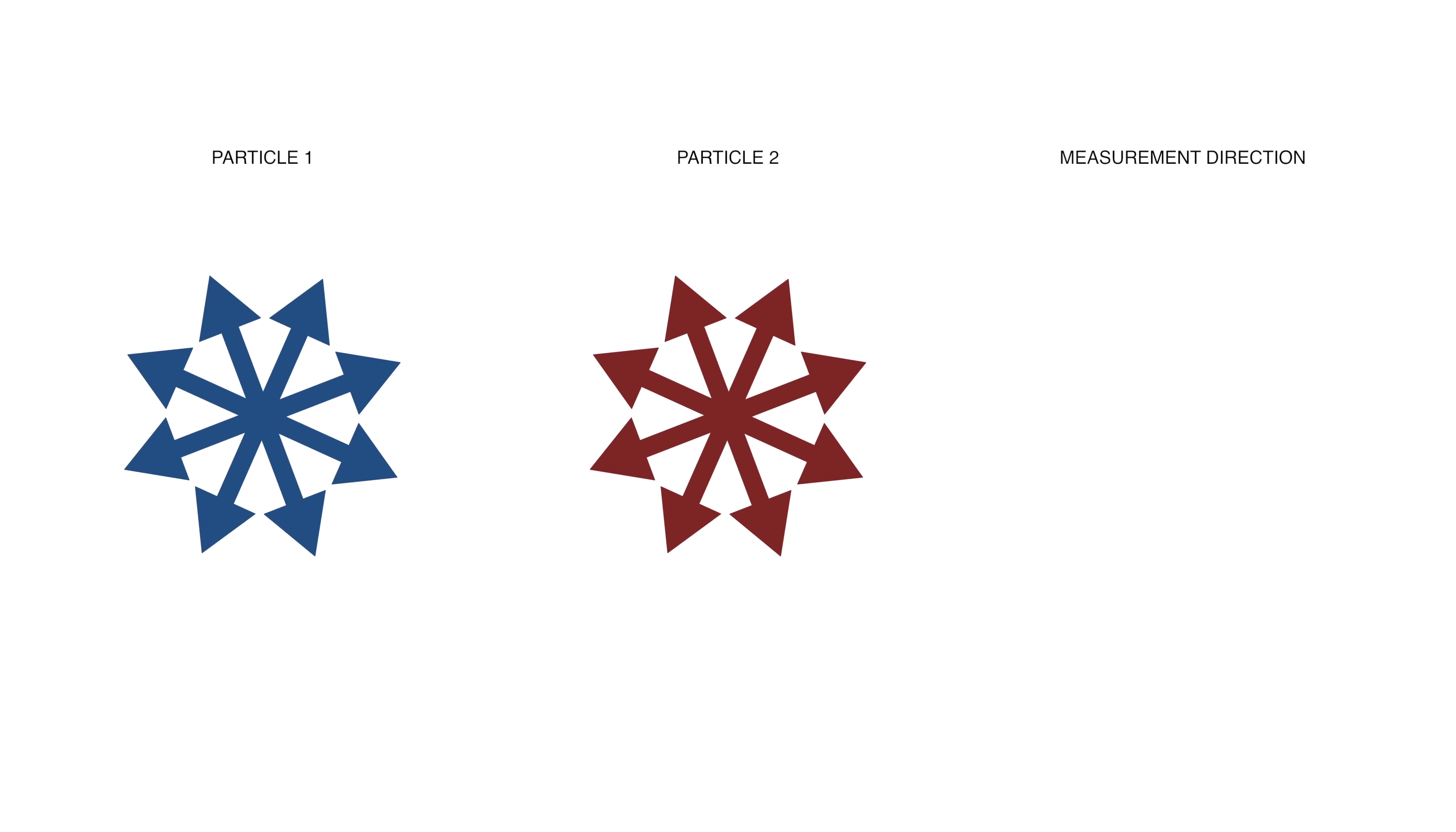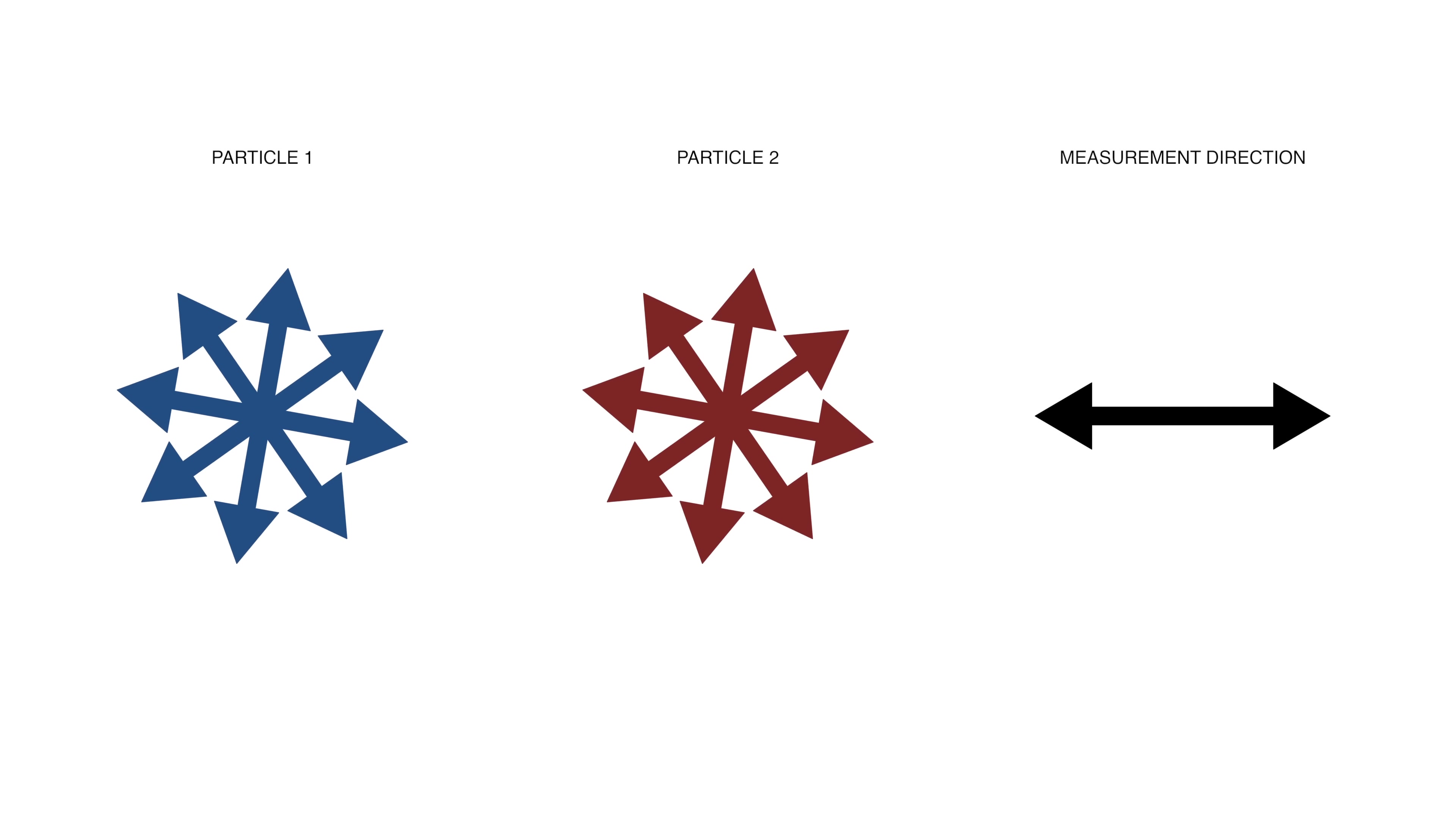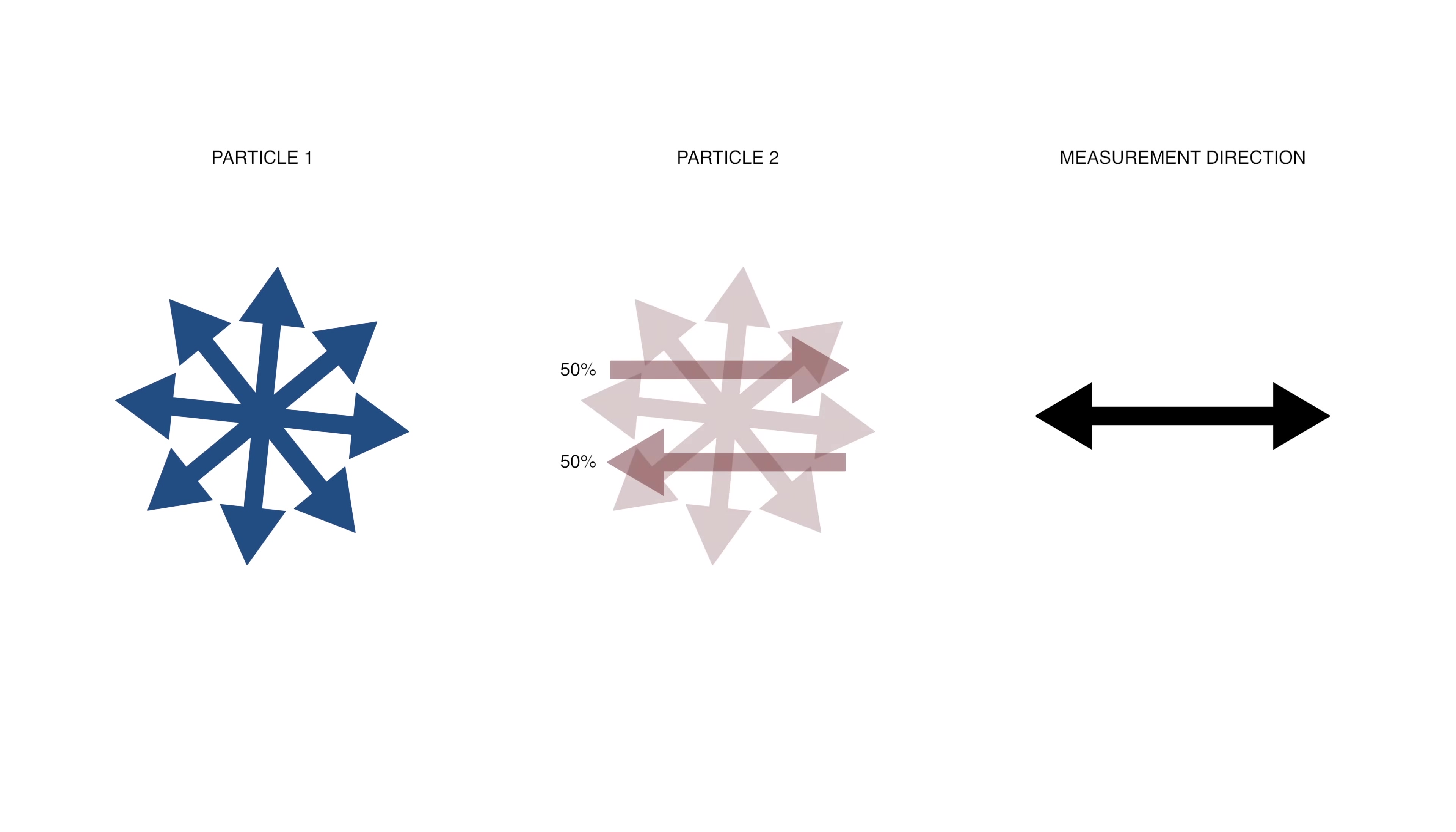Remember that one of the key facets of quantum mechanics is that the quantum world is intrinsically probabilistic. We can't know, even in principle, the outcome of a measurement before we make it. So, suppose we select one of the two particles and pick a direction to measure the spin. Say we pick horizontal. The measured spin will be either right or left each 50% of the time. We could have selected the other particle to do the measurement with the same result, 50% right and 50% left.